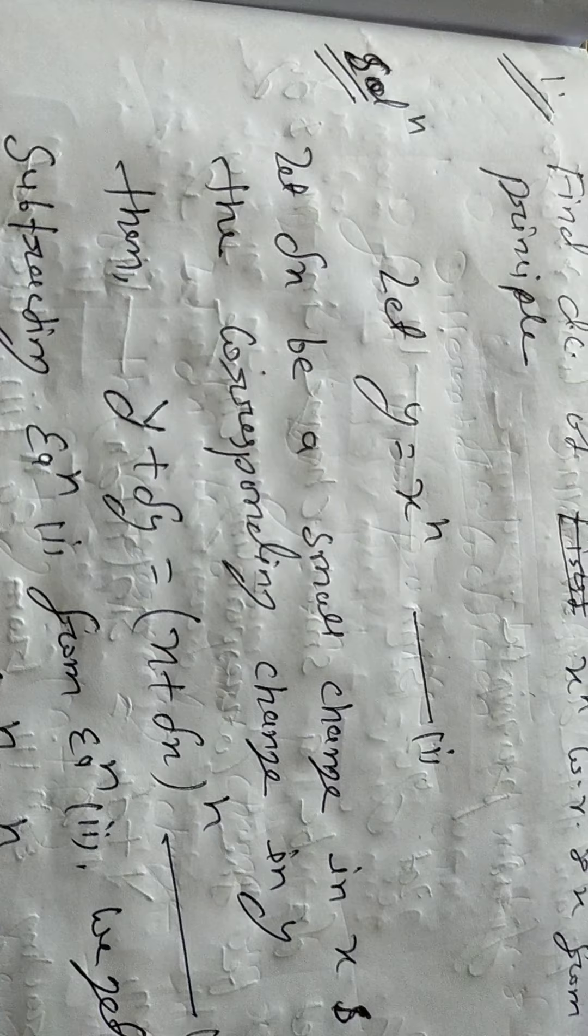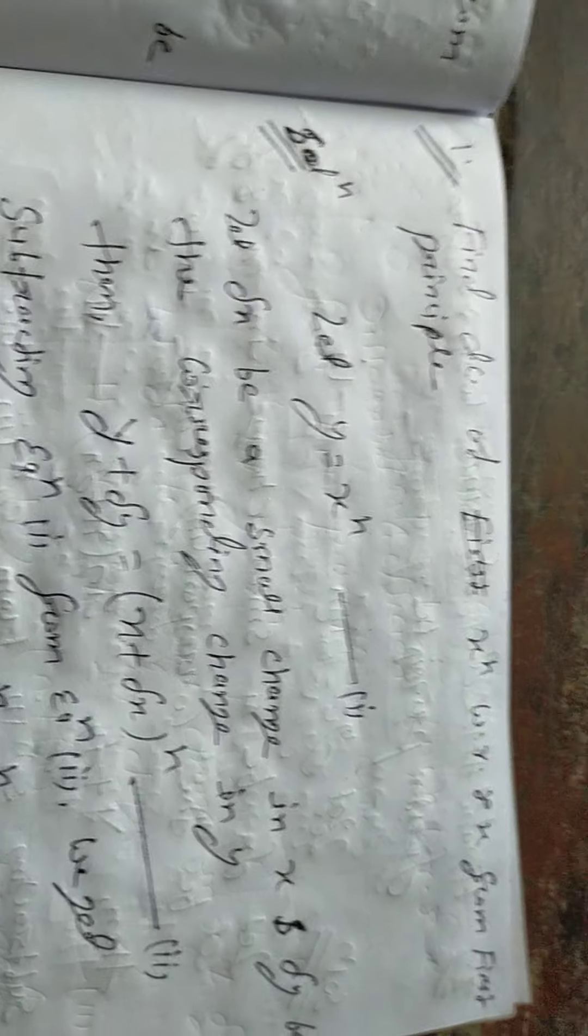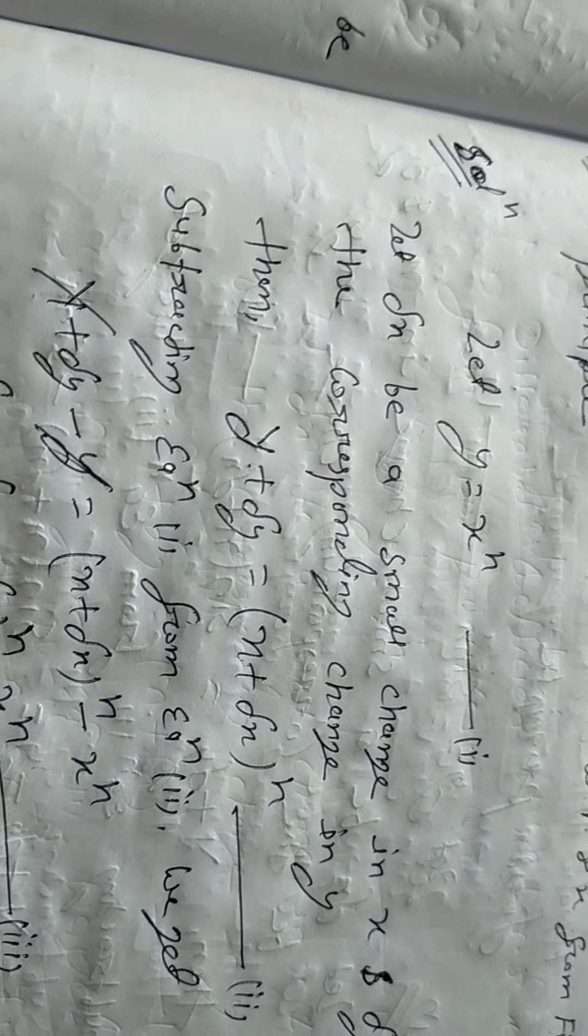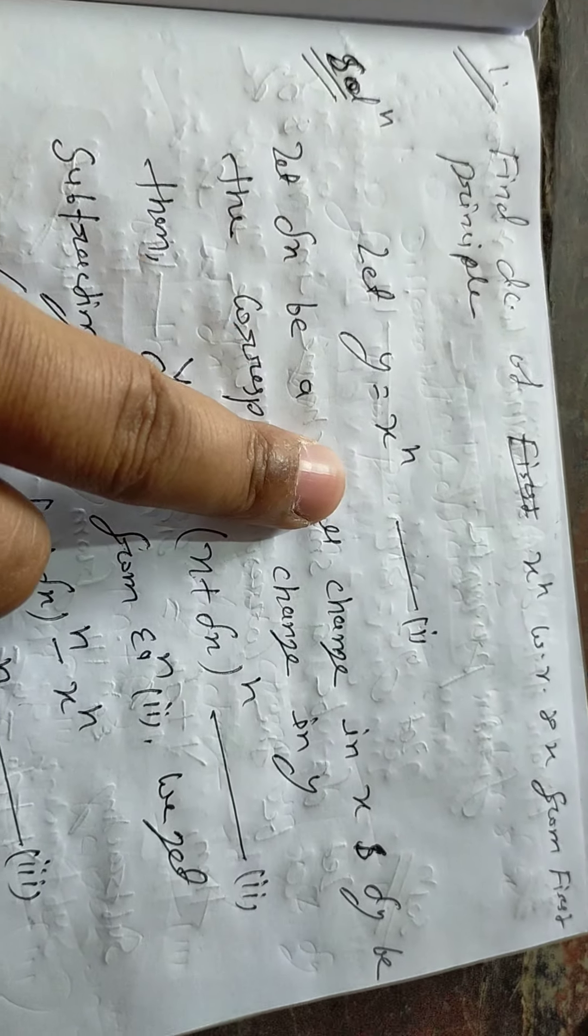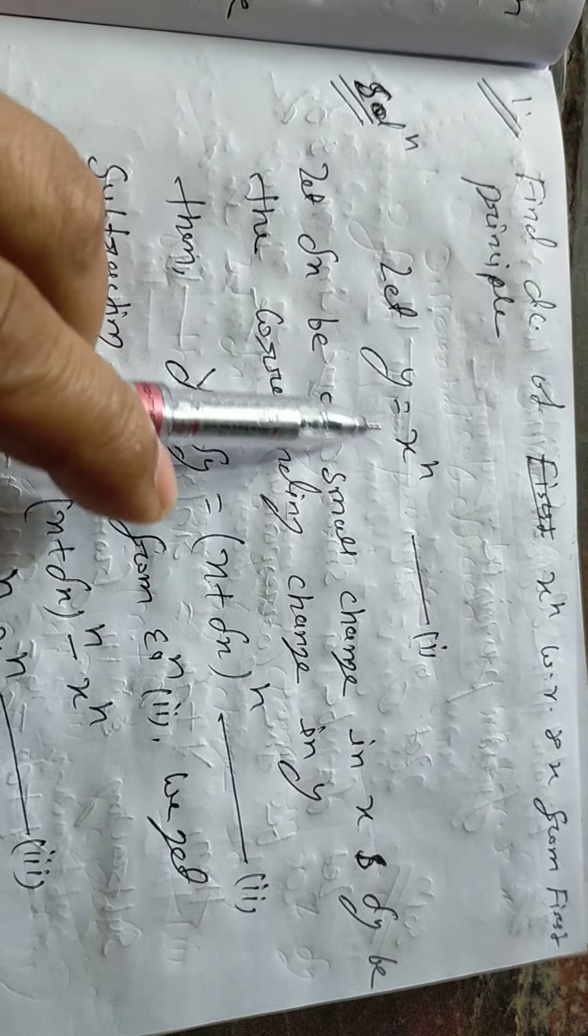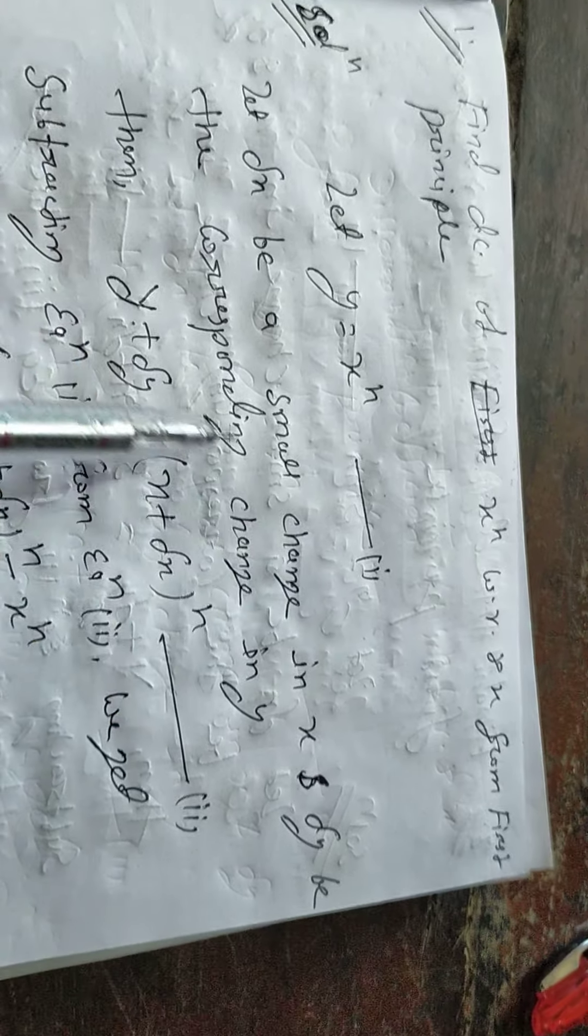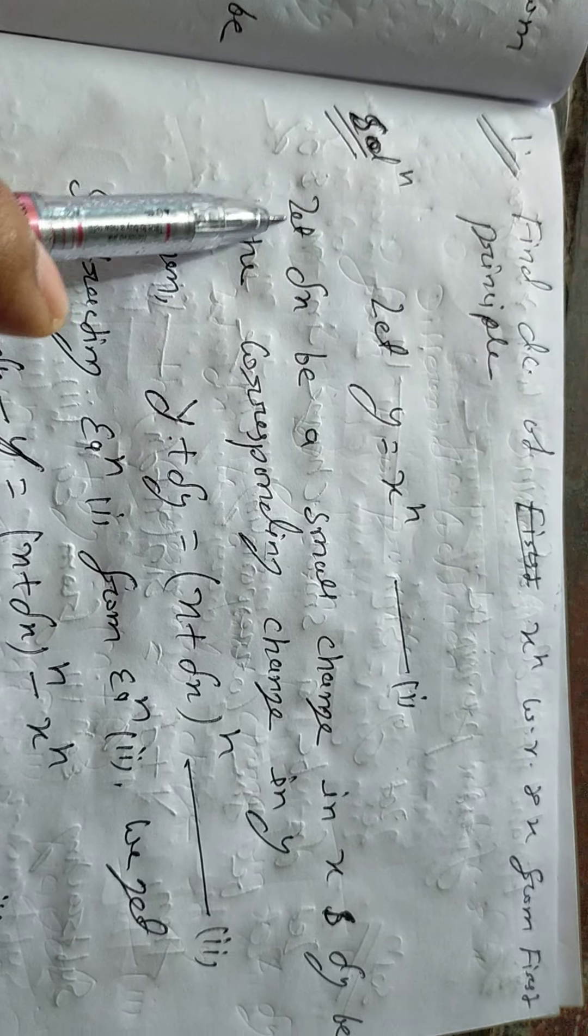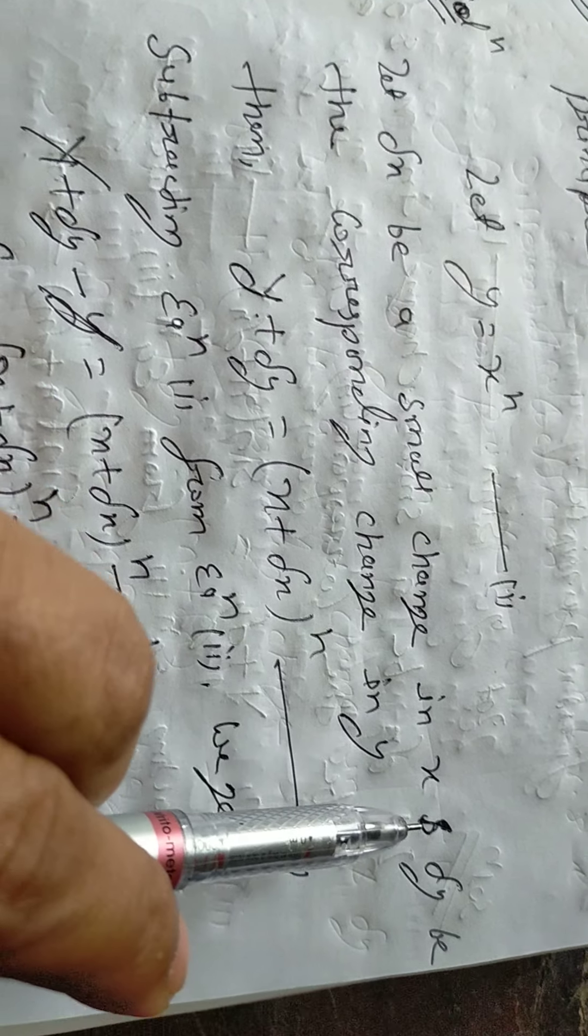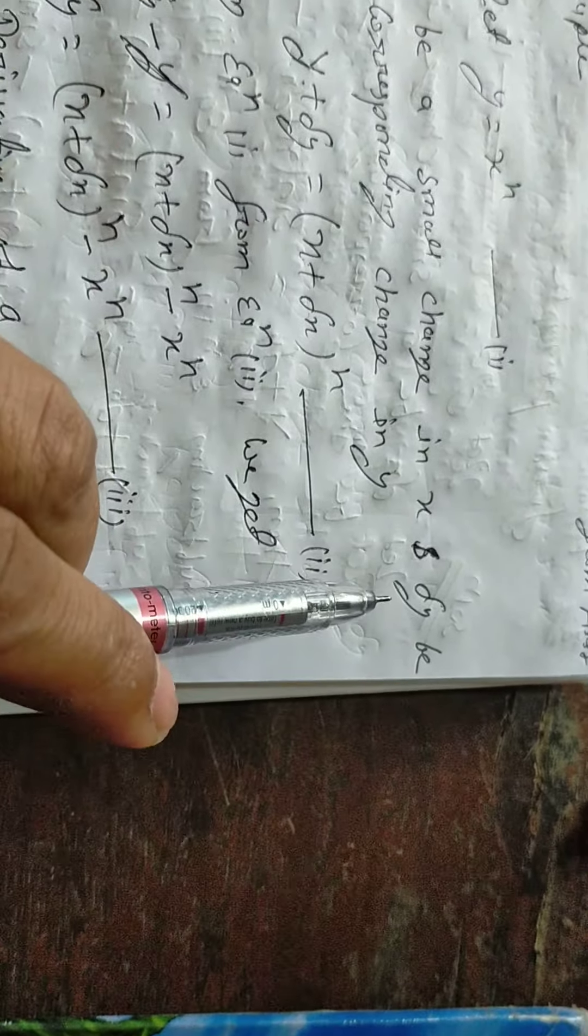From first principle, let y equal to x to the power n. Let y equal to x to the power n, equation 1. This is what we have to prove - y in the form of x to the power n, equation 1. Then in every question, we write the statement: let dx be a small change in x and dy be the corresponding change in y.